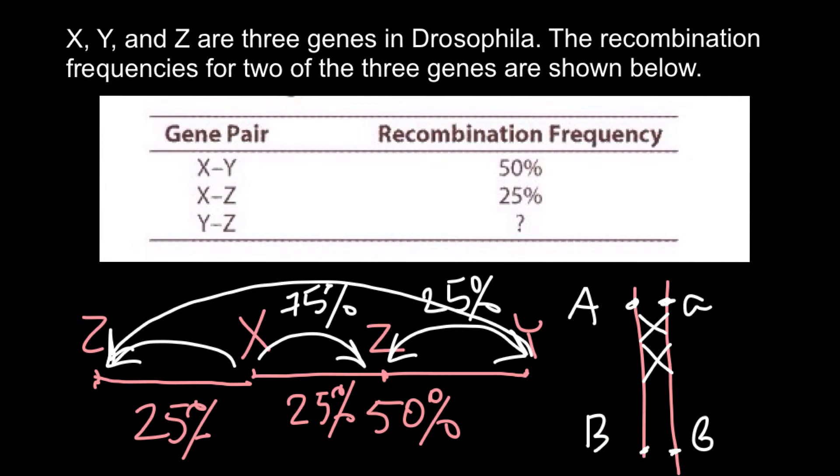And if we would have three crossing overs, we would have recombination. Again, if we would have four times crossing over, we wouldn't see any recombination. Again, those we had four crossing overs happen here. So if you think,